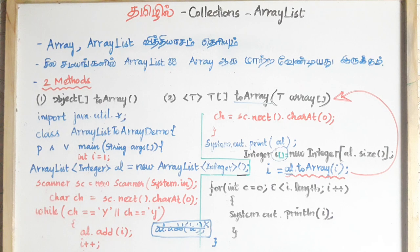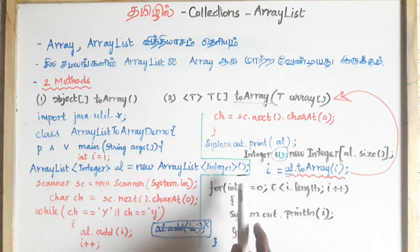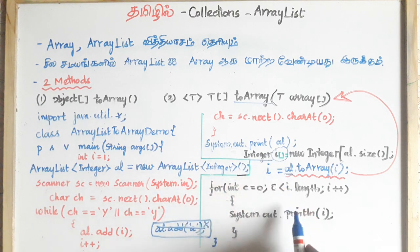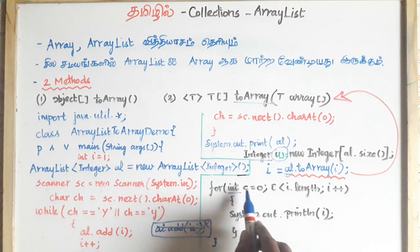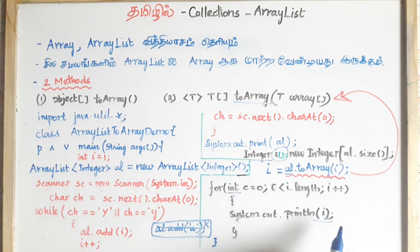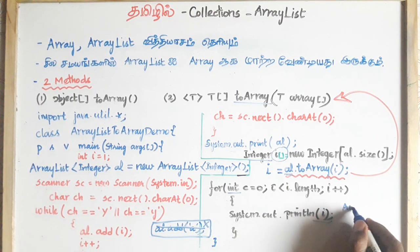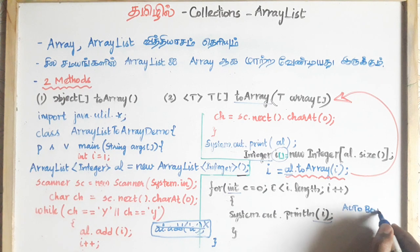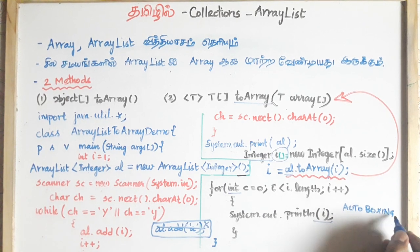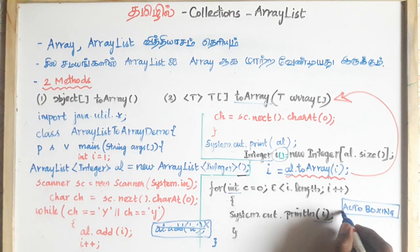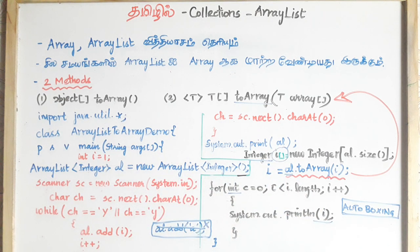We will talk about the first thing: when we create an integer, it is not treated as a primitive integer. But when we use it, it will be considered an integer and printed. Now we will talk about auto-boxing and auto-unboxing. We will discuss this with the integer wrapper class and auto-unboxing.